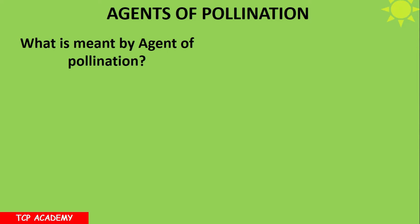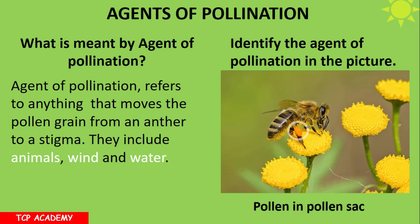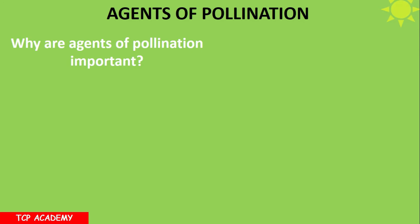Agents of pollination refers to anything that moves a pollen grain from the anther to a stigma. They include animals, water, and wind. Animals include our favorite, the honeybee. The agent of pollination in the picture is the honeybee. Observe that pulsing circle — that is what we refer to as the pollen sack, and in the pollen sack there are pollen grains.